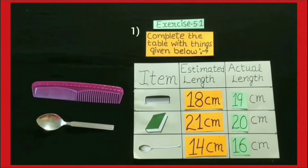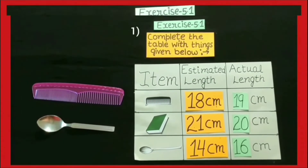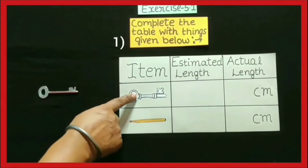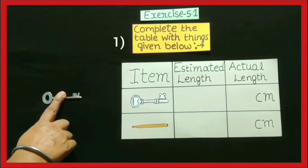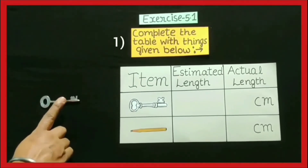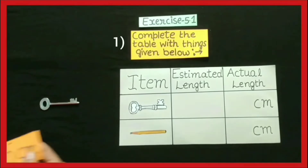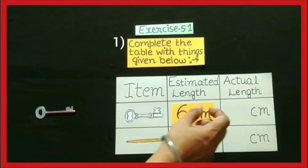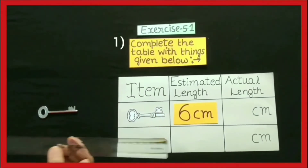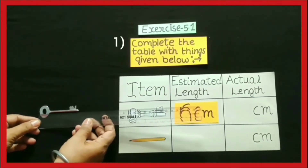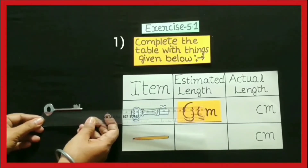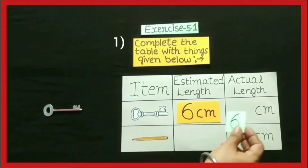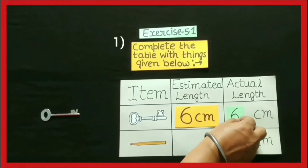Now students, the next thing is key. Observe this key and estimate its length. Its estimated length can be approximately 6 cm. To find out its actual length, we have to measure this key with the help of a scale, and its actual length is 6 cm.